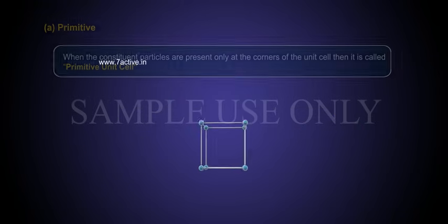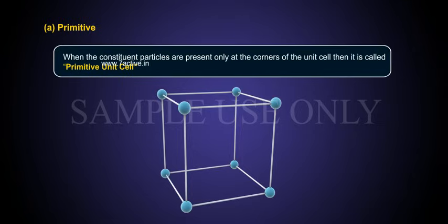When the constituent particles are present only at the corners of the unit cell, then it is called primitive unit cell.